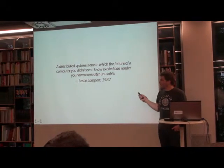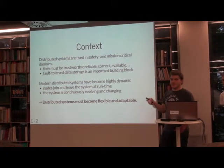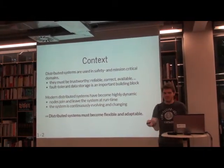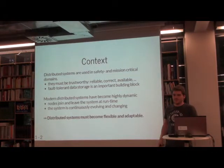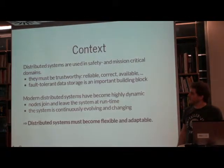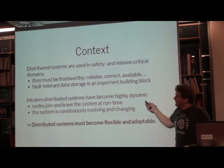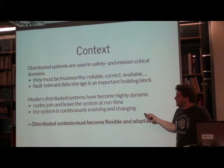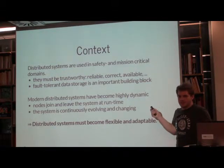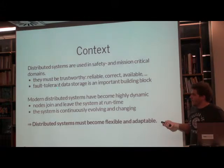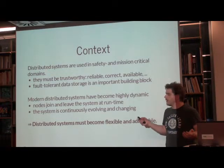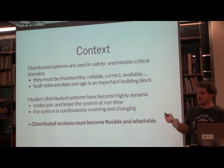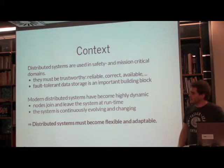We want a distributed system that can be used in safety and mission-critical contexts — for example, a flight control system or enterprise data storage. If you're doing a hobby project for your pet hamster, you probably don't need it. Safety and mission-critical domains means we have to be trustworthy, reliable, correct, available, fault tolerant, and so on. If one node leaves the system, our whole system shouldn't fail.